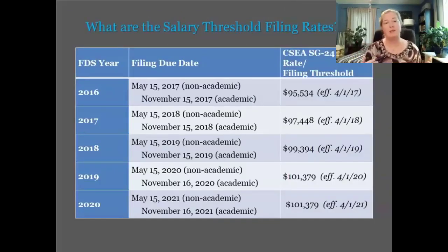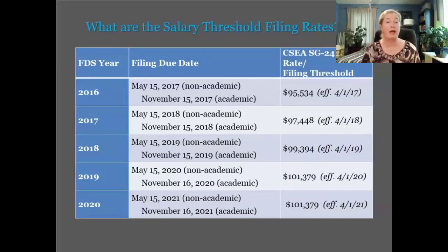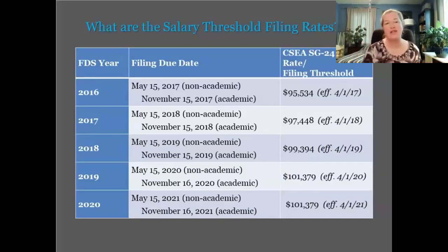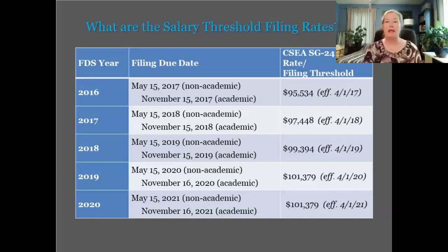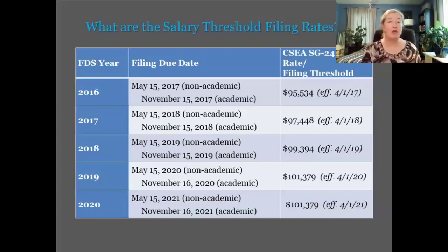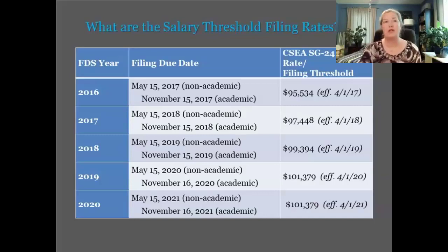The filing threshold is pinned to CSEA's salary grade 24 and usually changes year to year. We're in a special situation this year — CSEA has not yet negotiated their new contract. We presume negotiations are happening and that there will be a new salary schedule, but we don't yet know if it will be made retroactive. So the impact on threshold filers is currently unknown. For now, the salary threshold remains at $101,379. Once something changes, we will provide notice of what those changes mean for your filers.